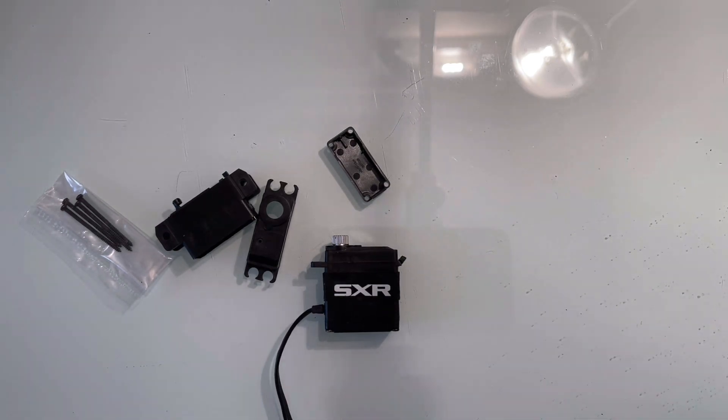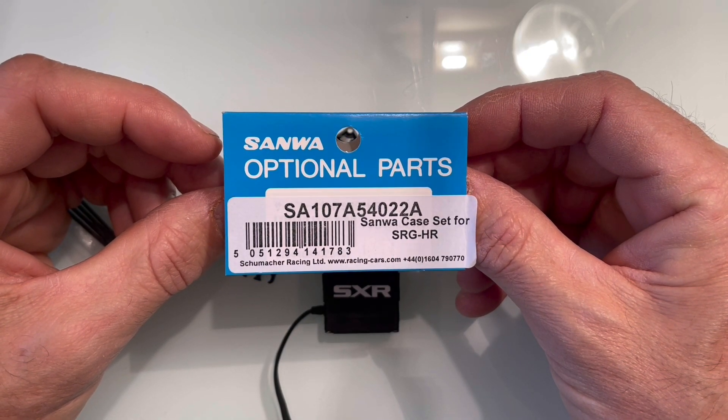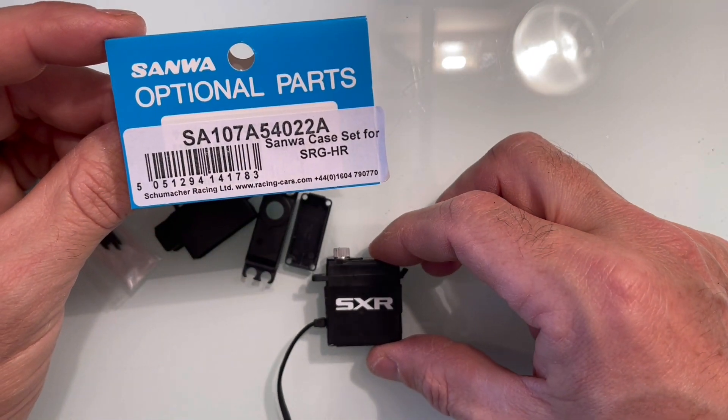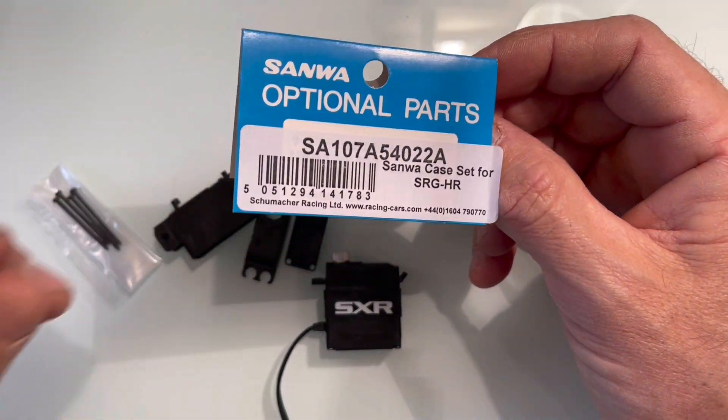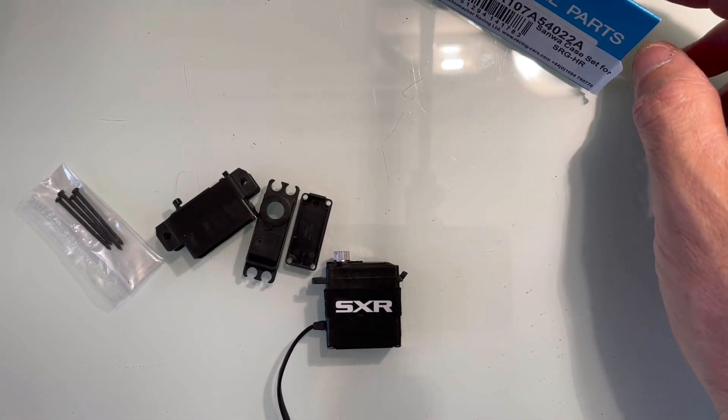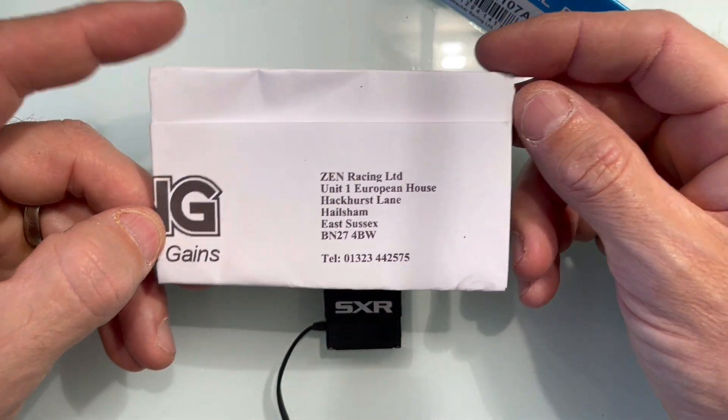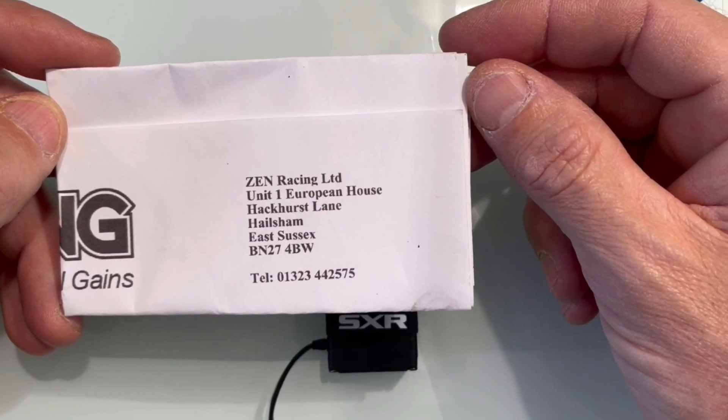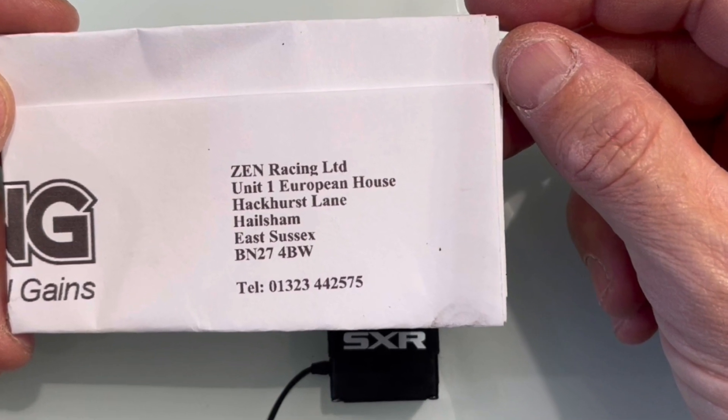Welcome to another On-Road Podcast video. Today I'm going to show you how to replace the casing on your Sanwa servo. It's pretty much the same for all servos really. This one is the Sanwa SRG HR replacement case. I got this from Zen Racing. Check out Zen Racing on their website and Facebook.